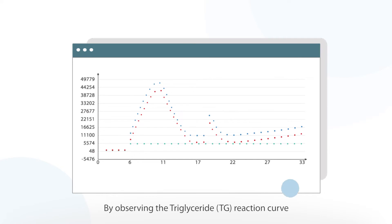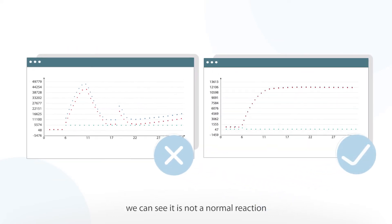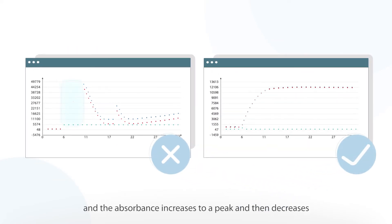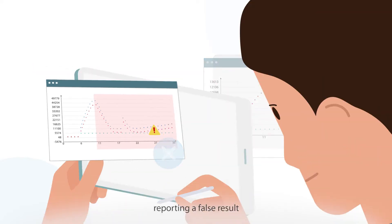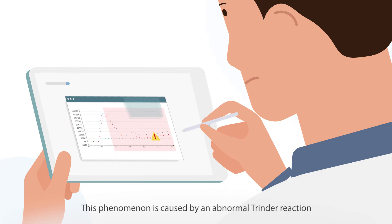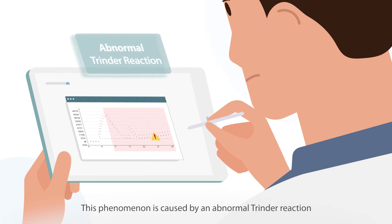By observing the triglyceride reaction curve, we can see it is not a normal reaction and the absorbance increases to a peak and then decreases, reporting a false result. This phenomenon is caused by an abnormal Trinder reaction.